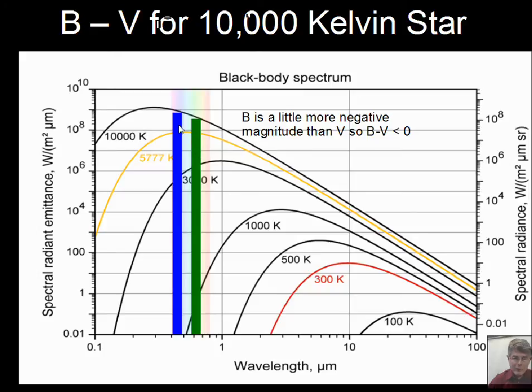So which one will have a more negative magnitude? If we have more energy, that's a more negative magnitude. So if we do this calculation, B minus V, the B number is more negative than the V number. And it will dominate and will have a negative value for B minus V. It won't be much different than zero, just slightly negative. As we would get hotter and hotter stars, it would become more and more negative until about the hottest stars, about minus 0.3. So it's not a huge number, but minus 0.3 would be for the very hottest stars. Here we have a medium hot star, 10,000 Kelvin, and we just have a slightly negative B minus V number.